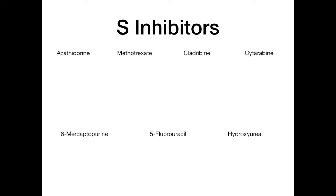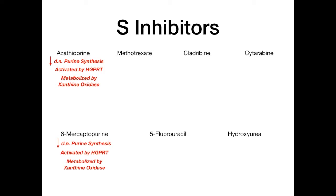Azathioprine and 6-mercaptopurine are basically the same thing for exam purposes because azathioprine gets metabolized into 6-MP. Both inhibit de novo purine synthesis — the names hint at this since 'purine' appears in mercaptopurine. Both are activated by HGPRT, and critically, both are metabolized by xanthine oxidase — deposit that tidbit in the back of your brain.